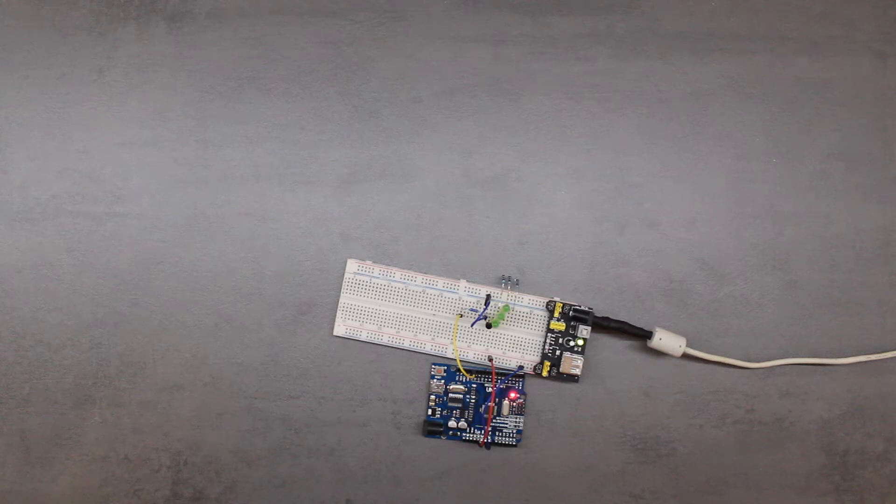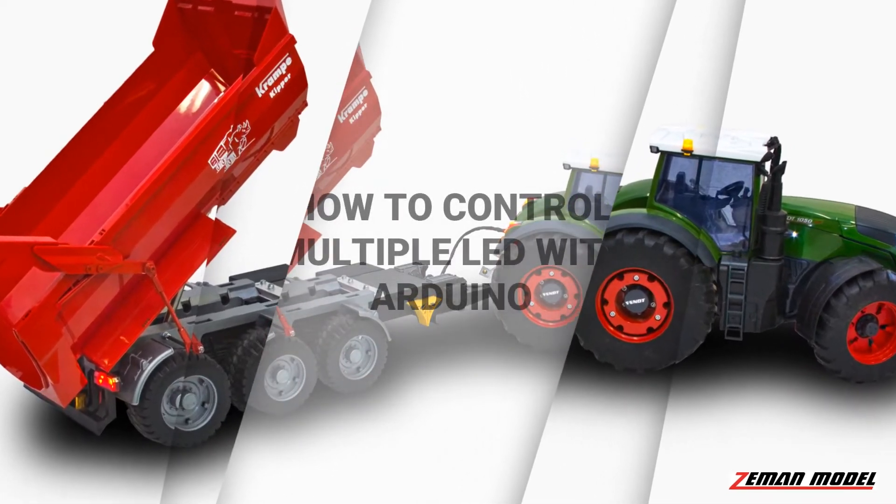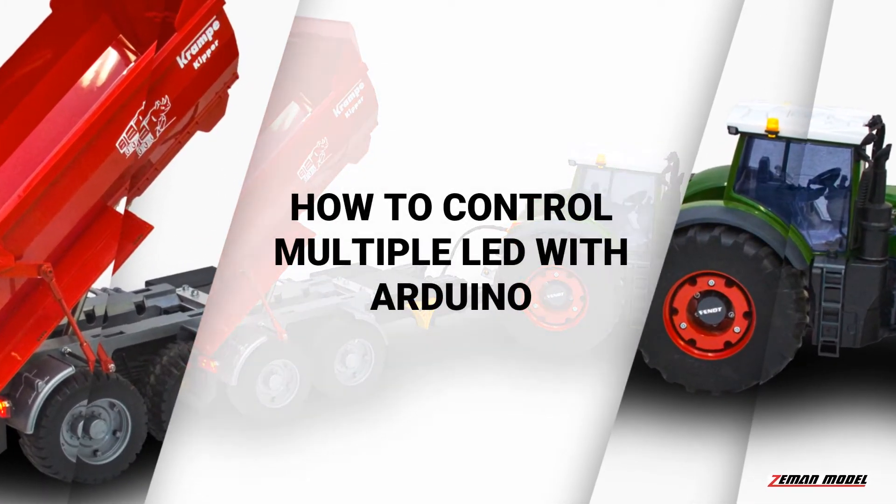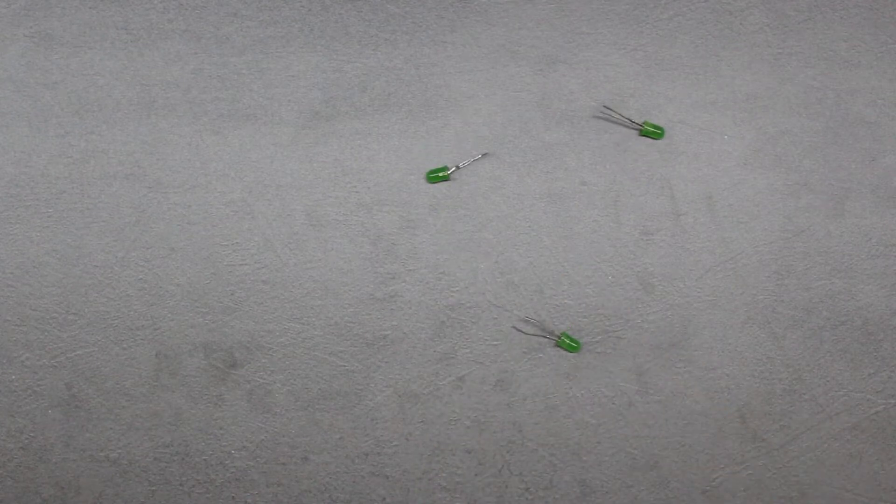In this video we look at how to control multiple LEDs powered by an external power source. So first let's start with the simplest example. Take some LED, resistor, and 5V power supply.